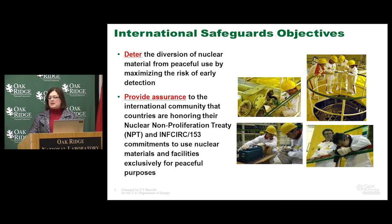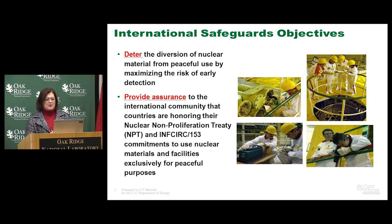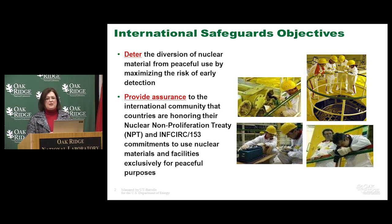I showed this slide in my previous presentation on the Nonproliferation Treaty just to remind you about what are the objectives of international safeguards. They are to deter the diversion of nuclear materials from peaceful use by maximizing the risk of early detection, and to provide assurance to the international community of the commitments made by these member states regarding the Nonproliferation Treaty and the international safeguards agreements that they are required to sign with the IAEA as signatories of the NPT.